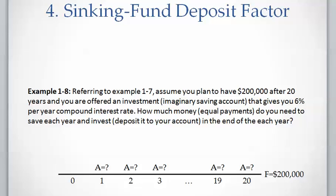The first step is drawing the timeline. The left-hand side is the present time — there is no payment at time zero. The right-hand side is the future, where you want a single amount of two hundred thousand dollars written at year 20. Note that two hundred thousand dollars has the same time dimension as the last payment A — both are in year 20. Your investment takes 20 years, so N equals 20, and above each year you write A, which is unknown and needs to be calculated.